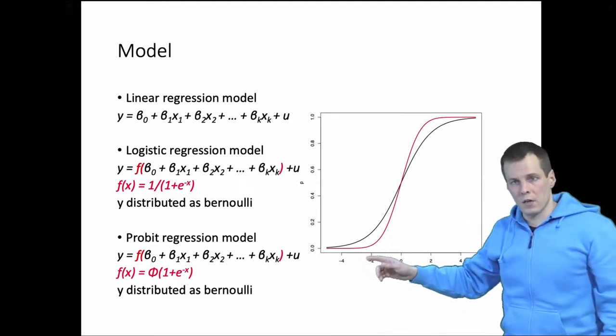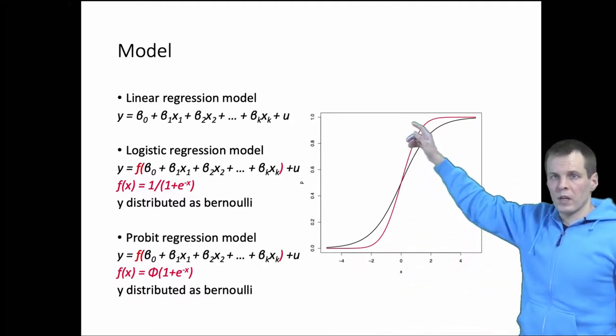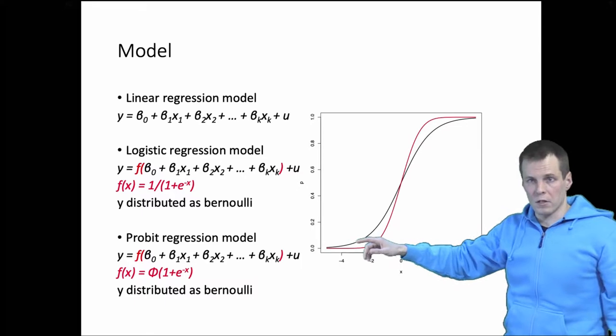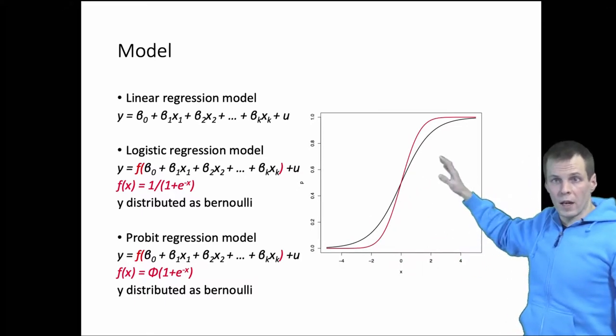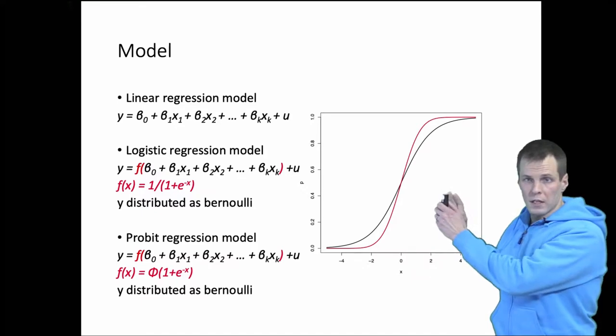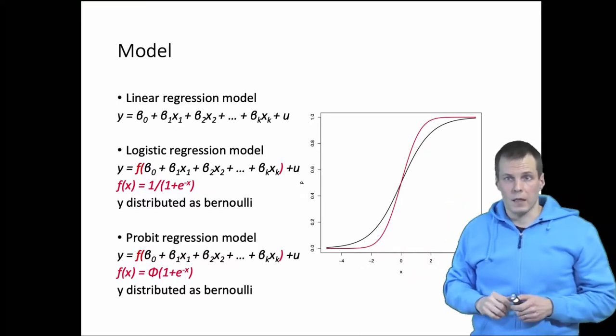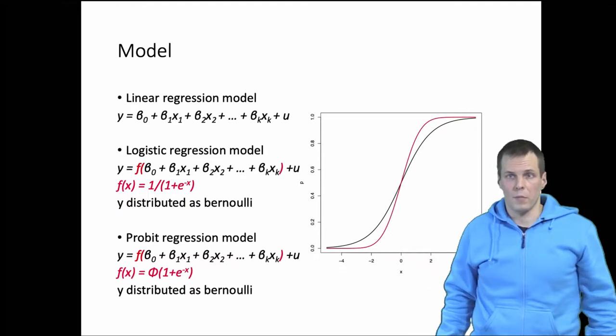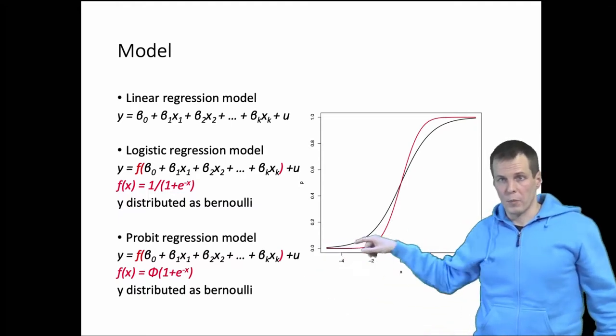When we look at the lines here, the red one is the probit line and the black one is the logistic curve. They look very similar. In fact, if we squeeze the logistic line a bit, then that will become very similar to the probit link.